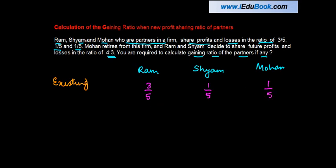Now Mohan retires from the firm and Ram and Sham decide to share future profits and losses in the ratio of 4:3. So the new profit sharing ratio between Ram and Sham is 4/7 and 3/7, seven being the sum of the two numerators.